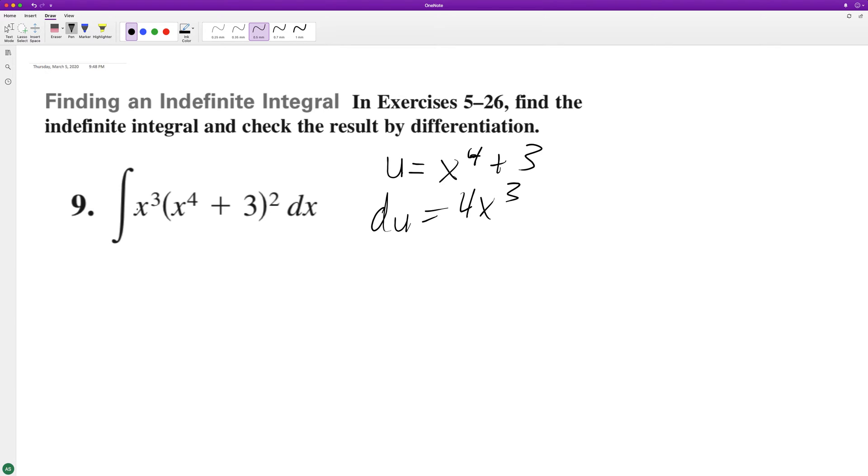The only thing we need to do to get du equal to dx is multiply it by one fourth. So we have one fourth quantity u squared du, and we just need to multiply by one fourth to get rid of that four.